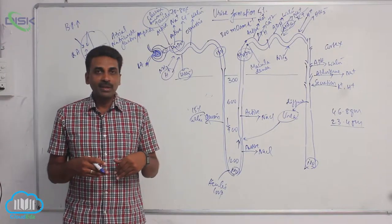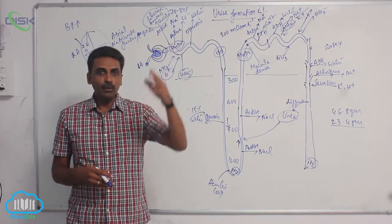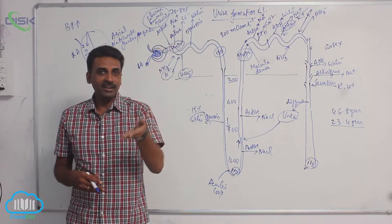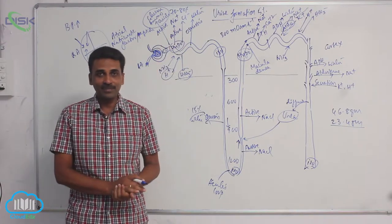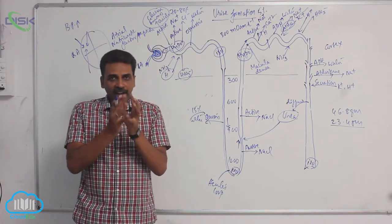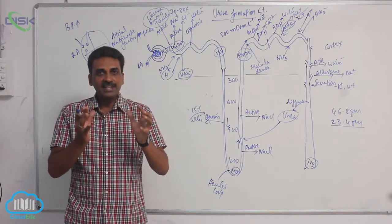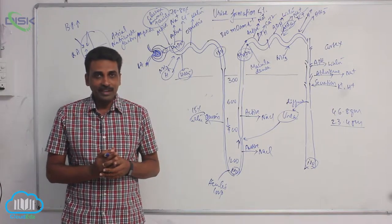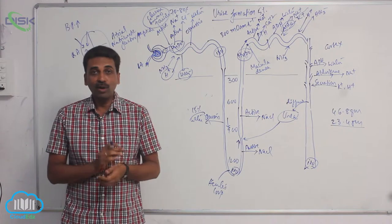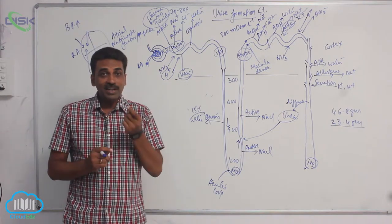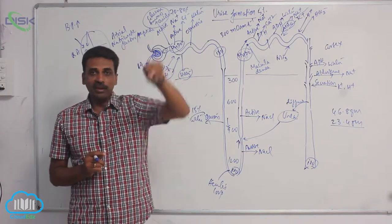Gradually, the urine flows from kidneys, ureter, and enters into urinary bladder. Now, gradually, when the urine is increasing inside urinary bladder, there are stretch receptors in the wall of urinary bladder which will convey the impulses to brain.